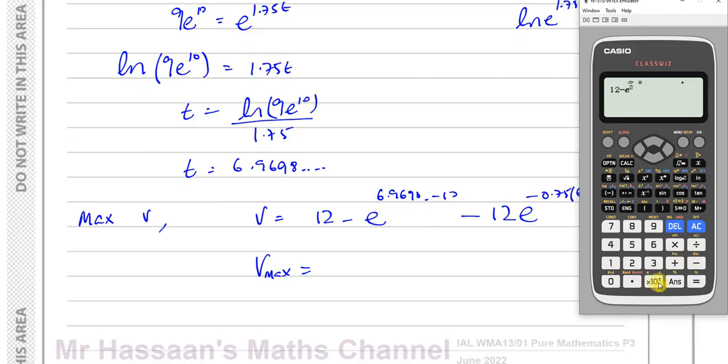By writing 12 minus e to the power of, the last answer, which was this, minus 10, and then minus 12 times e to the power of, again, negative 0.75 times the last answer. So that's going to give me, instead of this, it's going to give me this in those places, those answer places. So that's going to give me the maximum velocity being 11.887.